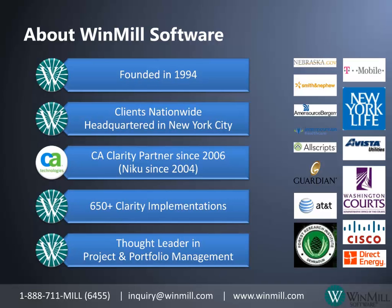Windmill Software provides the services you need to effectively utilize CA Clarity to improve project portfolio, financial, and resource management for your organization. They are a Preferred Services Partner and Advanced Channel Partner of CA Technologies, with over 650 Clarity professional services implementations since 2004. For more information, contact the Windmill account manager at inquiry@windmill.com or 1-888-711-6455.